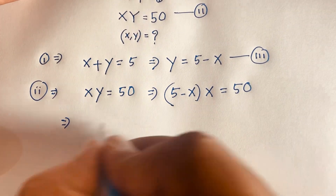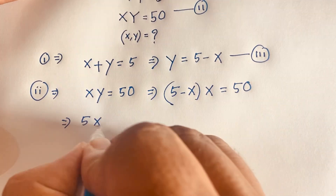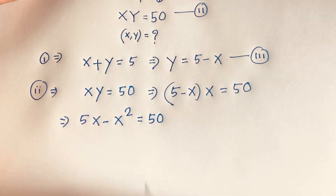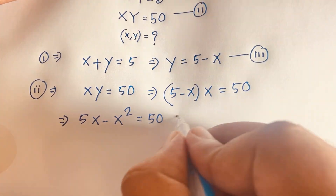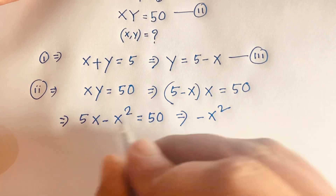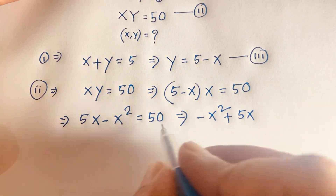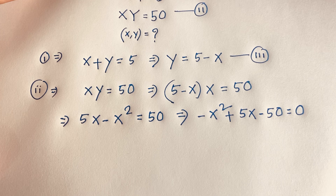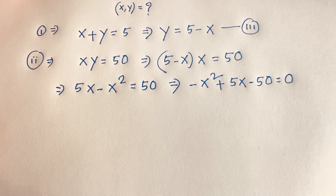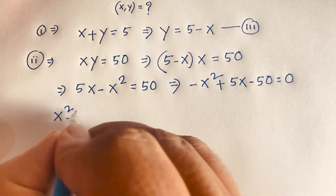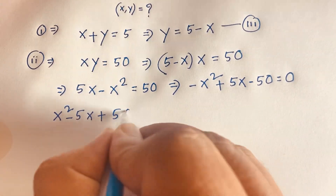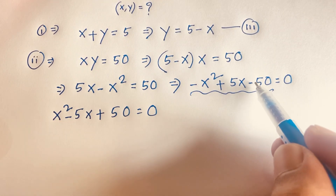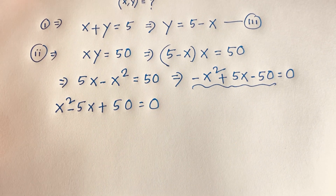Expanding this equation: 5 times x is 5x, minus x times x is x squared, is equal to 50. So I can see this equation is: negative x squared plus 5x, and if I move positive 50 to this side it becomes negative 50, equal to 0. We find an interesting quadratic equation: x squared minus 5x plus 50 is equal to 0. I take minus as common, so the signs flip and it equals 0.